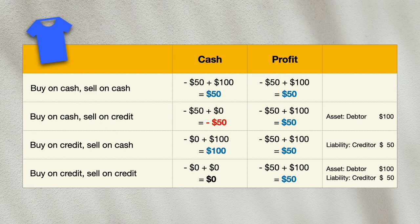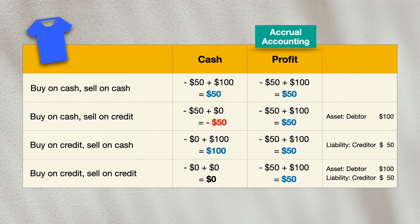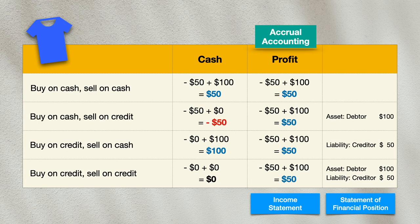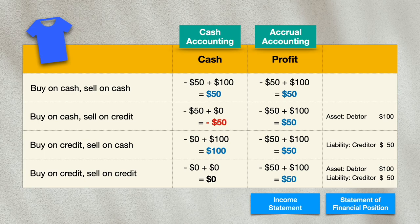As you can see, accrual accounting provides a better way of recording revenues generated and expenses incurred based on the work done and the resources consumed. Therefore, the profits reported in the income statement will truly reflect the economic activities of the business. Depending on how and when cash is collected and paid, the corresponding assets and liabilities will be reported accordingly in the statement of financial position. Cash accounting is not appropriate for recording revenues and expenses, as it depends on the timing of cash collection and payment, not on when work is completed or resources consumed.